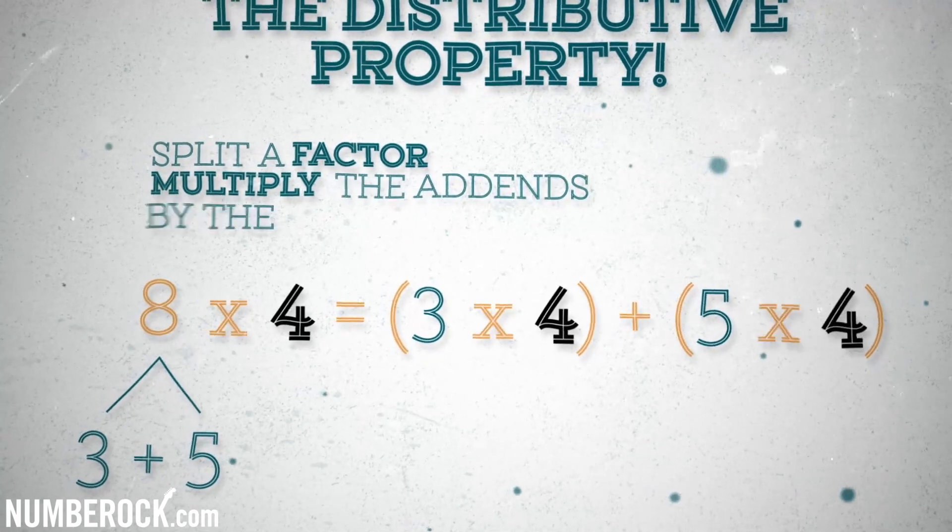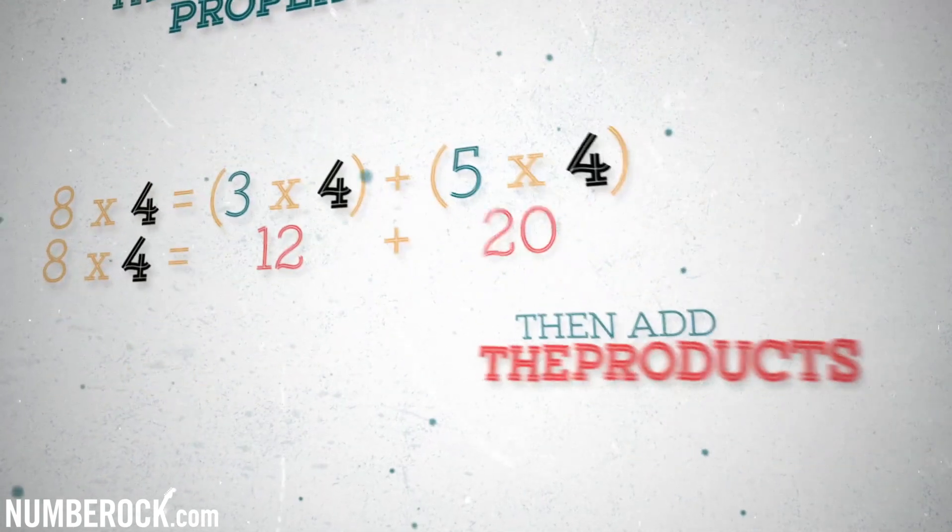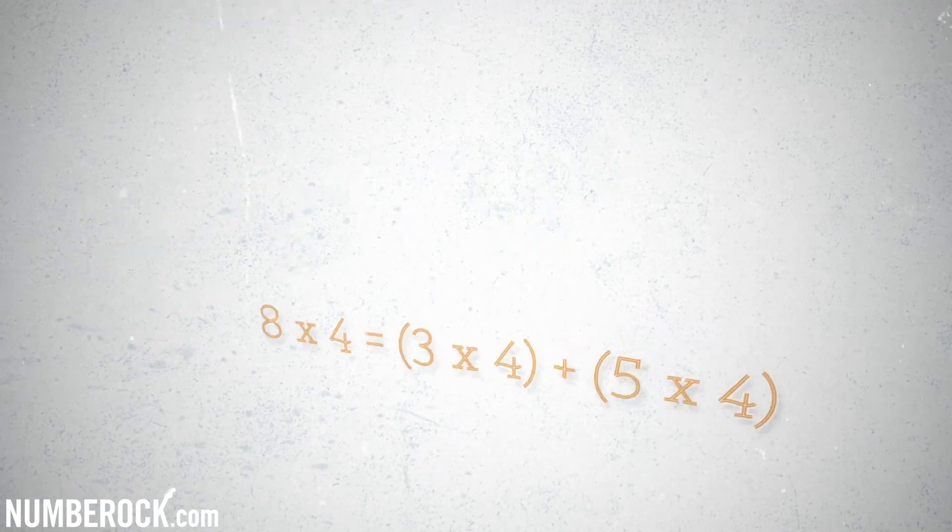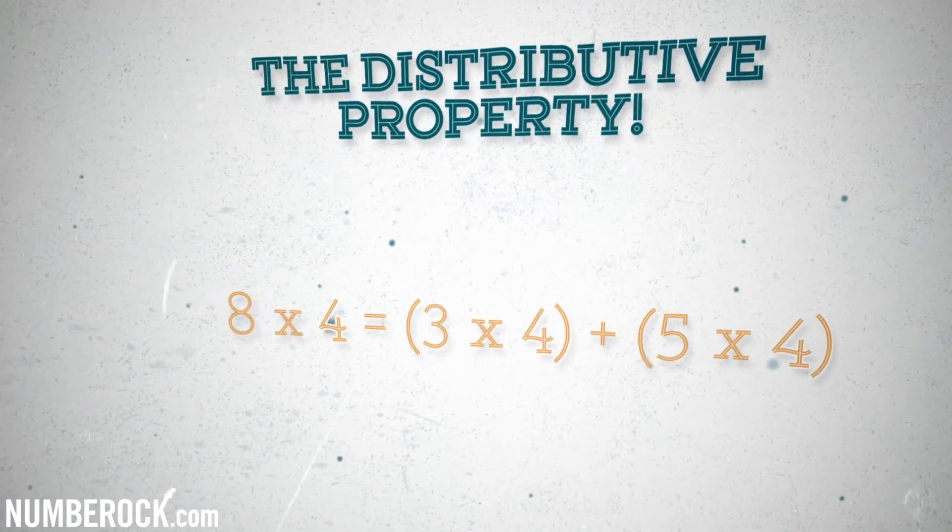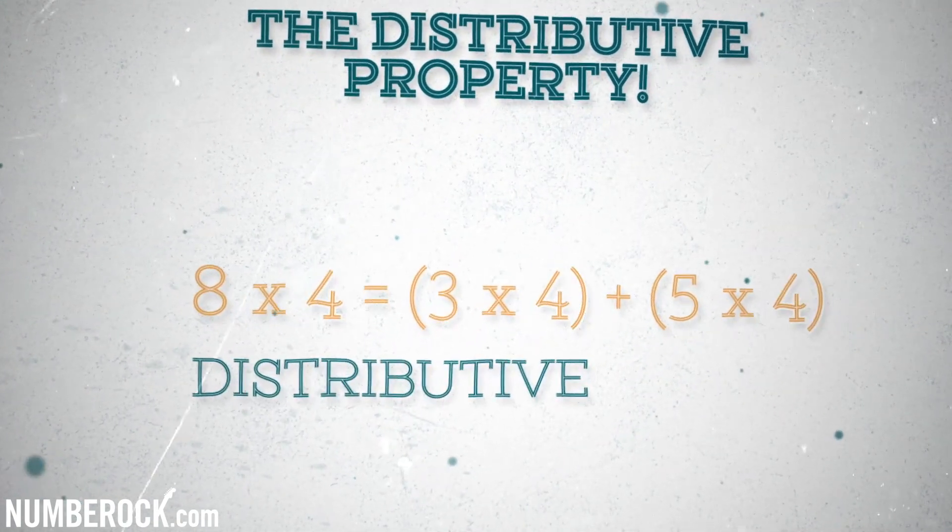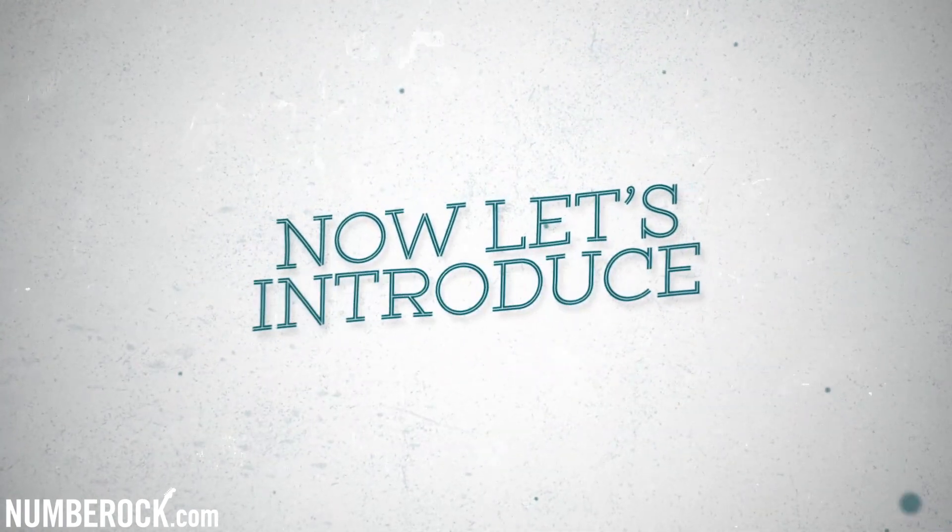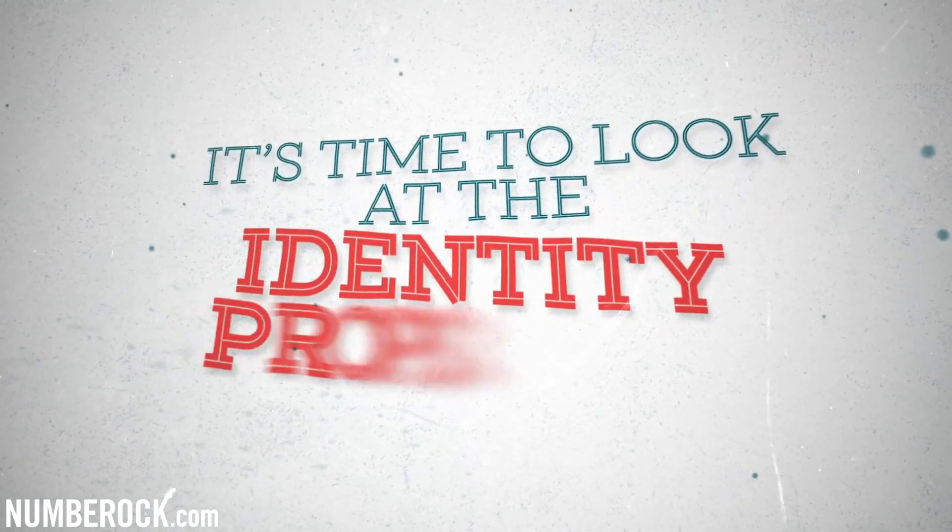Split a factor, multiply the addends by the other factor, then add the products up thereafter. Eight became three plus five, but times four stayed the same. Distributive is this property's name. Now let's introduce one that's easy peasy. It's time to look at the identity property.